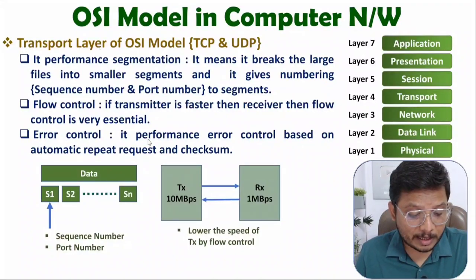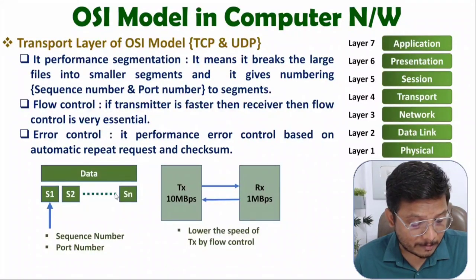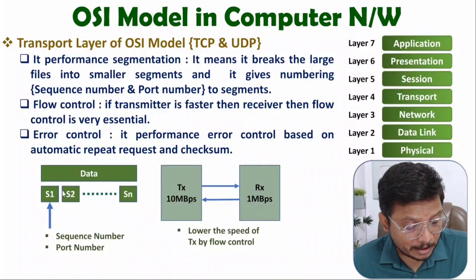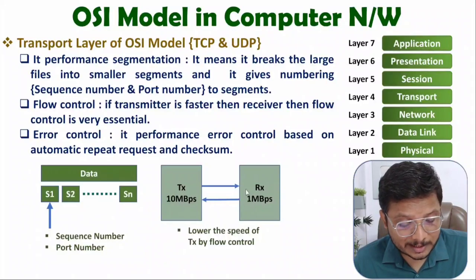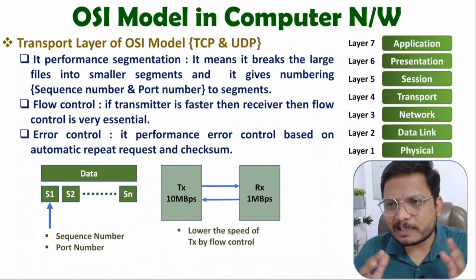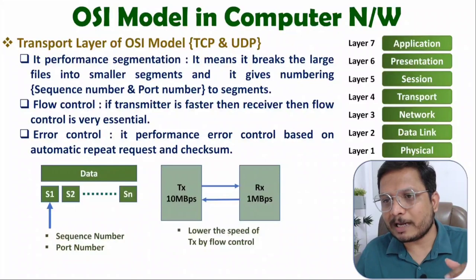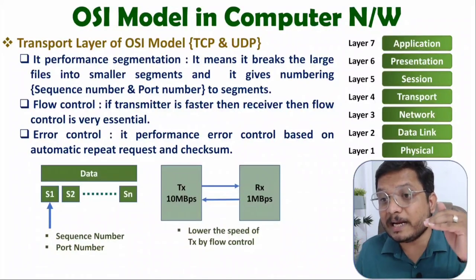Error control is also part of the transport layer, handled via Automatic Repeat Request (ARQ) and checksum. For example, if segment 2 is lost in the medium, the receiver tells the transmitter that segment 2 was not received, and an automatic repeat request is forwarded so the transmitter can resend that data. This typically happens with the TCP/IP protocol.